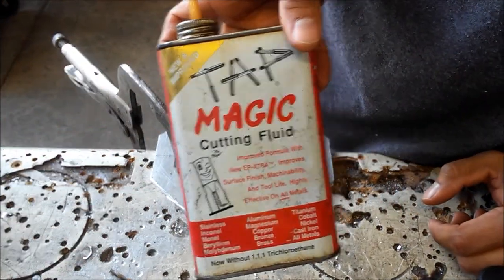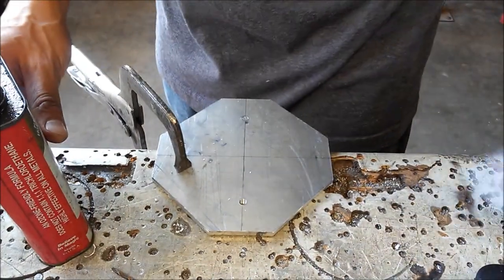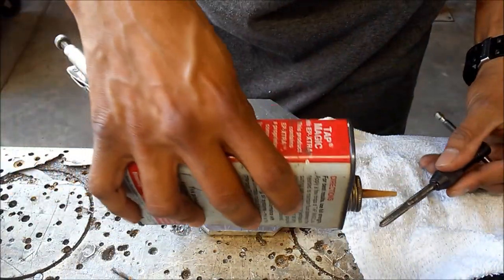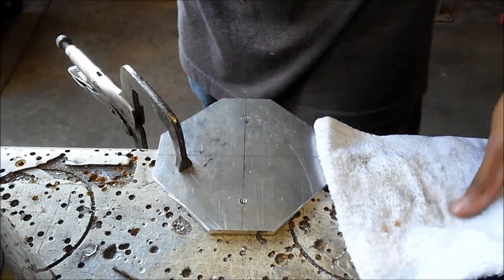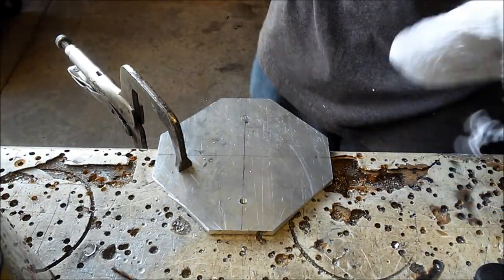Once your hole is ready, go ahead and grab some cutting fluid and put some on the tap itself. Start by pressing down and turning the tap like if you're trying to screw it in.